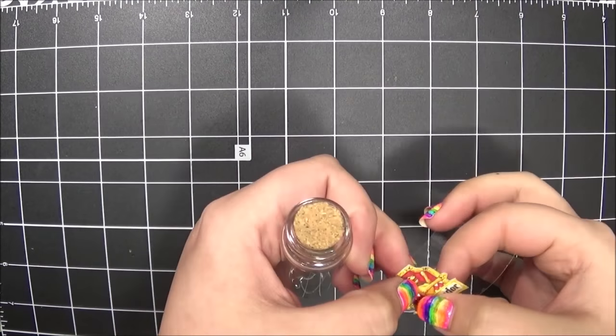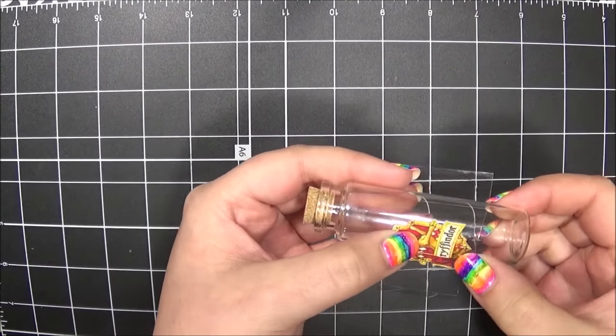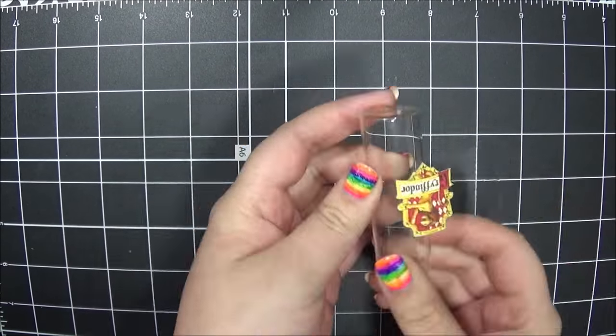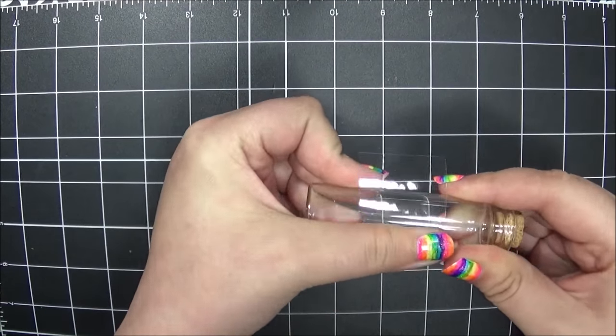Then I took a corked bottle and placed the taped crest in the middle of the corked bottle. Obviously you're going to repeat this step with each of the houses.